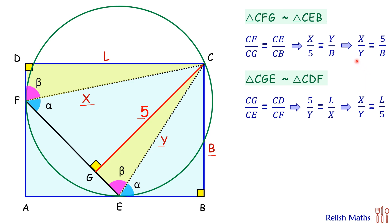So here both the values LHS is equal. X upon Y is 5 by B and X upon Y is L by 5, and thus these values will be equal. Or we can say that 5 upon B is L upon 5. Doing cross multiplication we get 25 is L times B. But L times B is the area of the rectangle, and thus area of rectangle is 25 centimeter square, and that's our answer.